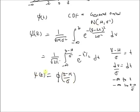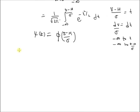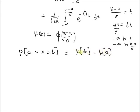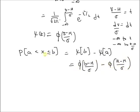So the CDF of a normal random variable with mean μ and variance σ² is equal to Phi((z minus μ) over σ), where Phi is the CDF of the standard normal random variable. The final property we want to look at is the probability of an interval: the probability is given by Psi(b) minus Psi(a), that is the difference between the CDF at b and the CDF at a. Since the CDF of the normal random variable is given by the expression above, this equals Phi((b minus μ)/σ) minus Phi((a minus μ)/σ). This is the expression for the probability of an interval for random variable X.